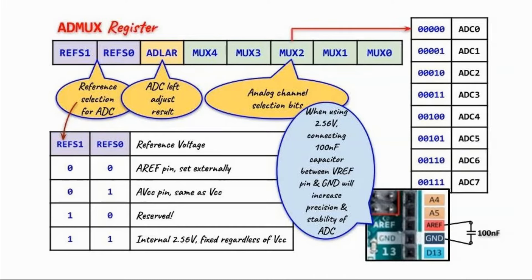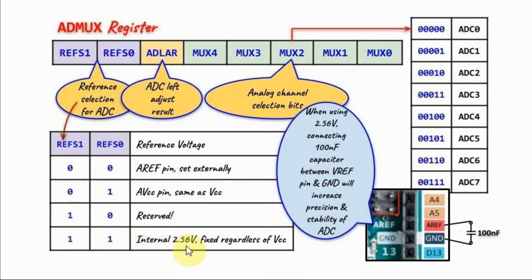The two reference selection bits determine the type of voltage reference used by the ATD converter. A value of 00 means we are using the external analog reference pin; 01 means we are using the analog VCC pin, which is the same as VCC; 10 is not used; and 11 means we are using the internal 2.56 volt reference. In this video we'll be focusing on the internal reference.